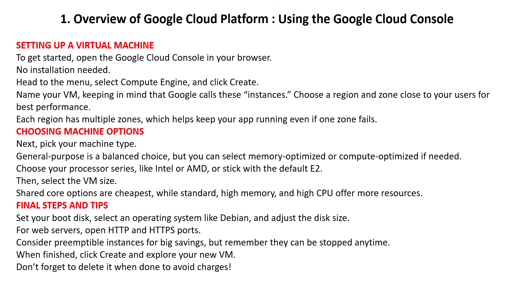Migrating your server applications to GCP is easier than you might think. The simplest way is to move your app to a virtual machine, or VM, on GCP. To get started, open the Google Cloud Console in your browser — no installation needed. Head to the menu, select Compute Engine, and click Create. Name your VM, keeping in mind that Google calls these instances. Choose a region and zone close to your users for best performance.